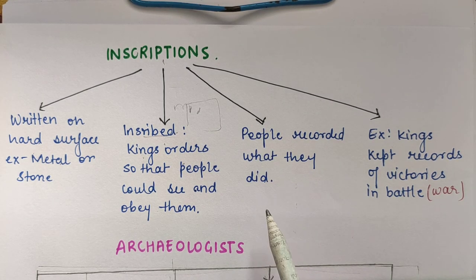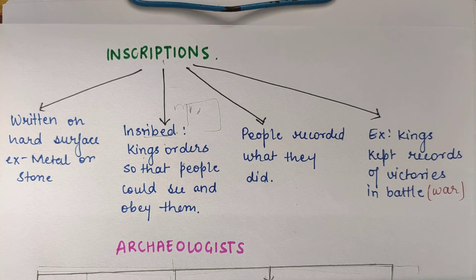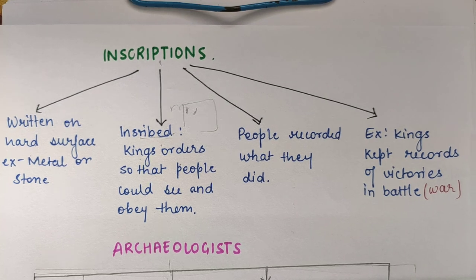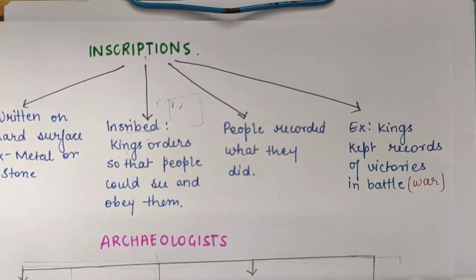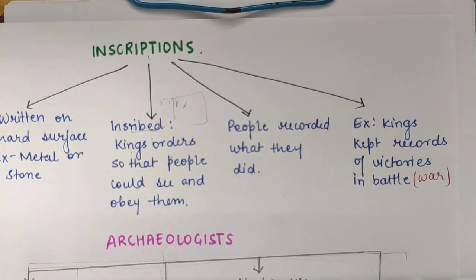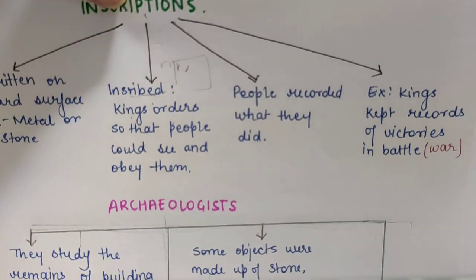People also recorded what they did — Raja, Rani, ya ordinary people many times were recording what they were doing in their daily life, aur usko inscriptions par likhte the. Kings kept records of their victories in battles — jab bhi rajaon ne battle jeeta tha, uska bhi record inscriptions mein rakha jaata tha.